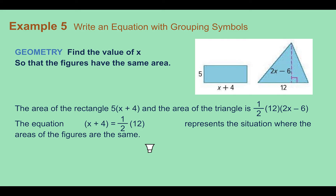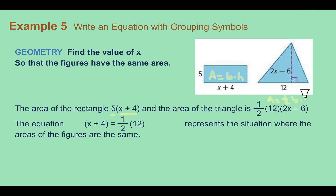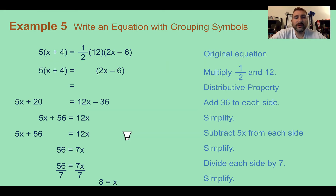Example 5: write an equation with grouping symbols. Our real-world context is geometry. Find the value of x so the figures have the same area. We have a rectangle whose area is base times height, so the area is 5 times the quantity x plus 4. The area of the triangle is one-half times base times height. If we want to know when they're equal, we set 5 times the quantity x plus 4 equal to one-half times 12 times the quantity 2x minus 6.